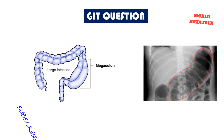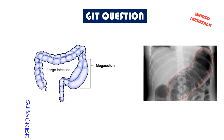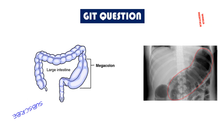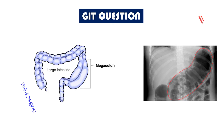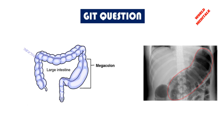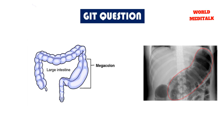Abdominal ultrasound is not typically performed to diagnose toxic megacolon. It is usually obtained in patients with acute right upper quadrant abdominal pain due to cholecystitis or ascending cholangitis, or suspected nephrolithiasis. It is also done to identify the level of free fluid in acute abdominal trauma.